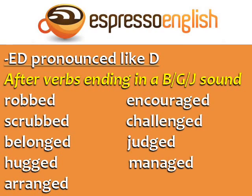Finally, ED is pronounced like D after verbs ending with a G or J sound. This is one of the most difficult to pronounce, so let's practice.